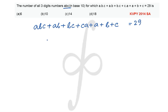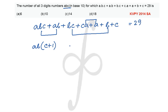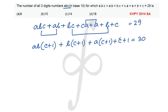The expression on the LHS can easily be factorized if we closely inspect it. We make three groups: (ABC and AB), (BC and B), (AC and A). This gives AB(C+1) from the first group, then B(C+1) from the second group, then A(C+1) from the third group. We can forcefully add 1 on both sides to get another factor of (C+1).